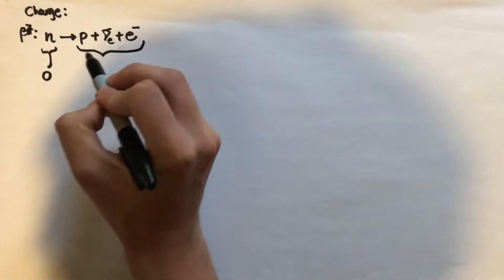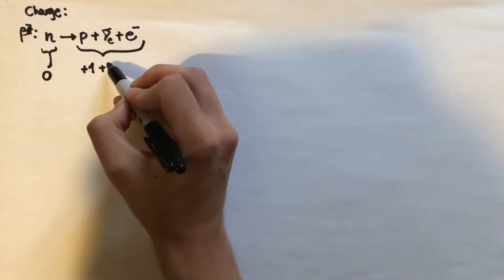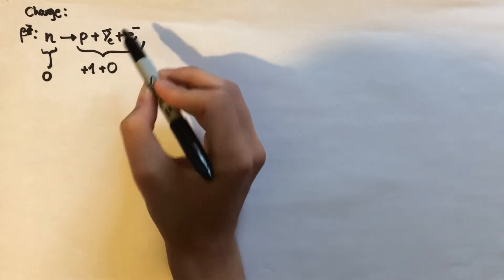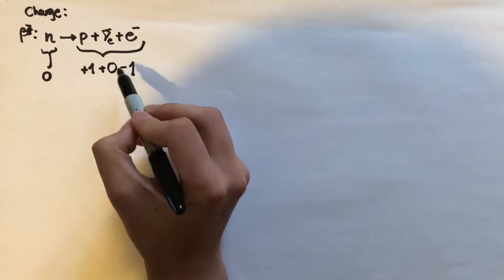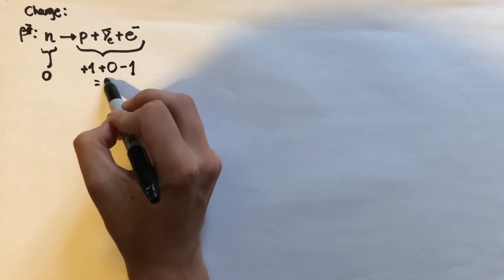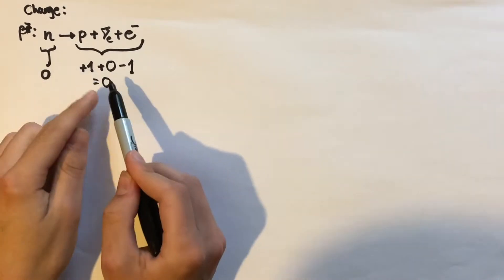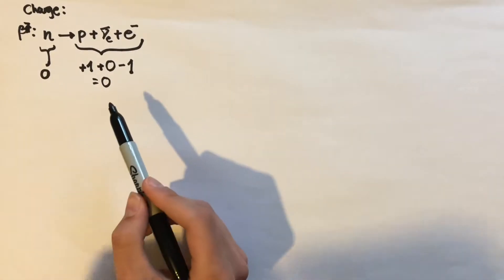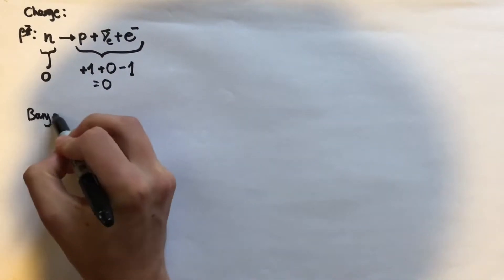On the right-hand side, we have the proton with a charge of plus one, the anti-electron neutrino which is a neutrino so it has no charge, and the electron which is negatively charged. So we have plus one plus zero minus one, which equals zero. The charge before and after the reaction is the same, so charge is conserved.